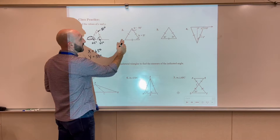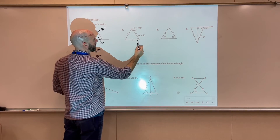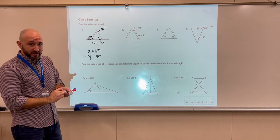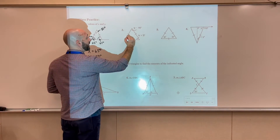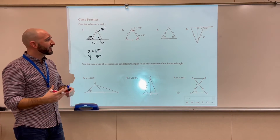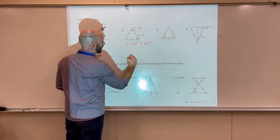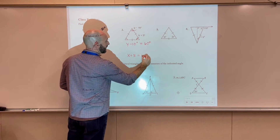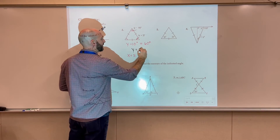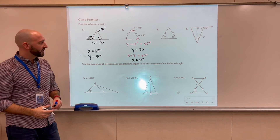For the next problem, we have y minus 10 degrees as the top angle and x plus 5 as another angle. The triangle is equilateral, which means it's also equiangular, so all angles have to be congruent. Since they're all congruent and the interior angles sum to 180, each angle equals 60 degrees. We set up two equations: y minus 10 equals 60, and x plus 5 equals 60. Adding 10 to both sides gives y equals 70. Subtracting 5 from both sides gives x equals 55.